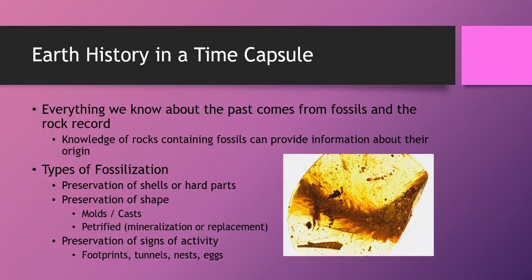There are different types of fossils that can be found. Fossils can be found where you have preservation of shells or hard parts of a particular organism. You can also have preservation of the shape of an organism — a rock forms over an organism, and when the organism is removed, you're left with a void or it's replaced with sediment, giving you a cast. You can also have organisms that are petrified, where mineralization or replacement occurs within the organism itself — this is what happens with petrified wood.